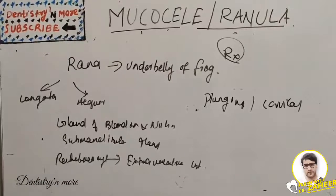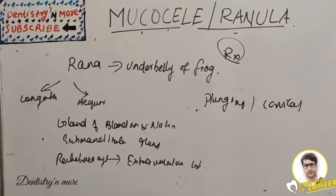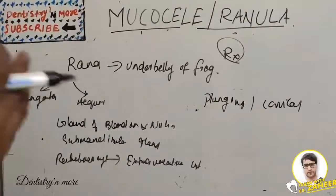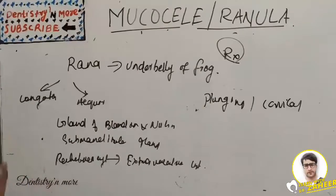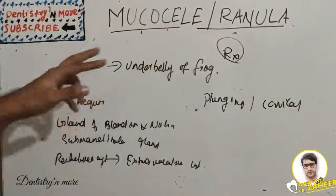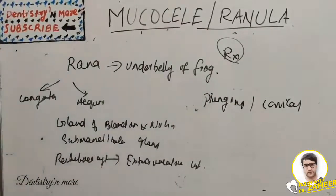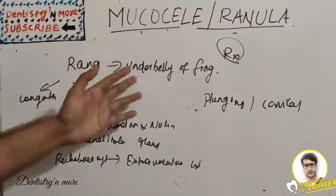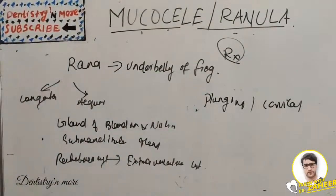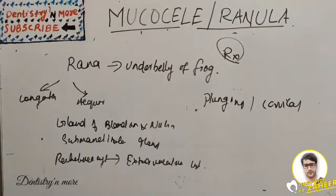To summarize: a mucocele is a dome-shaped, fluid-filled cavity caused by rupture of a minor salivary gland. A ranula is a mucocele occurring in the floor of the mouth; because of its peculiar shape resembling the underbelly of a frog, it is called a ranula. We covered the types, how it forms through extravasation and retention processes, and the treatment. I'll come up with a new topic in Dentistry and More — thank you.